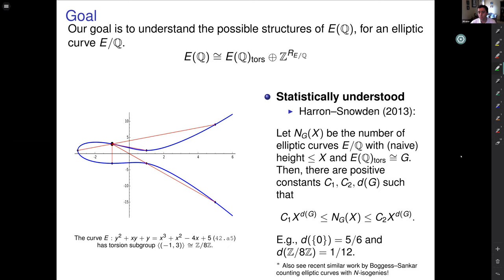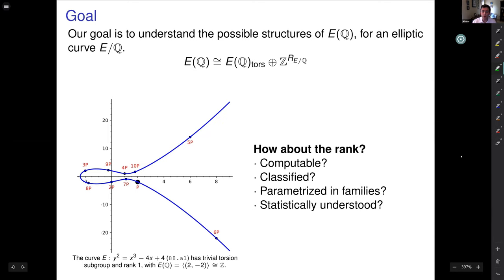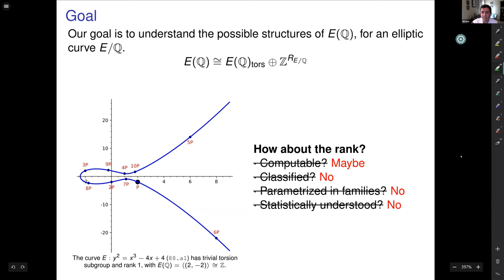There is also some really cool similar work — a generalization by Boggess and Sankar on counting elliptic curves within isogeny classes. So how about the rank? Is it computable? Can we classify what possible ranks are there? Do we have parameterizations? Do we know about statistics? And the answer is mostly no, no, no, and no.